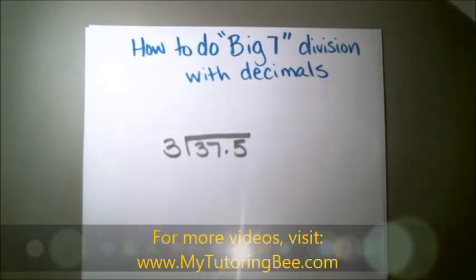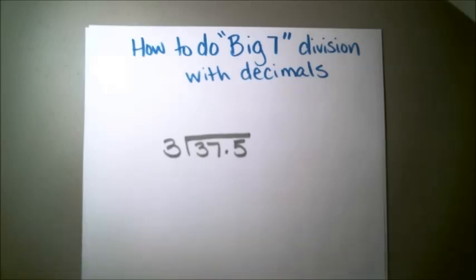Hey everyone, I recently had a comment on one of my other videos about the Big 7 method, and they asked if this method works for decimals as well. So I wanted to make a video to show you that it does. I have a problem set up here: 37.5 divided by 3.